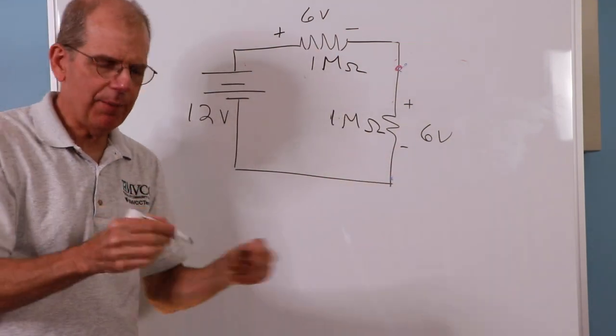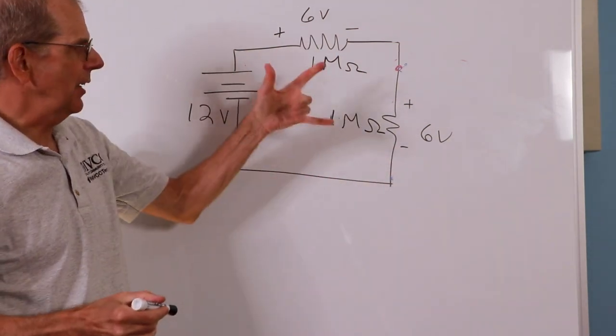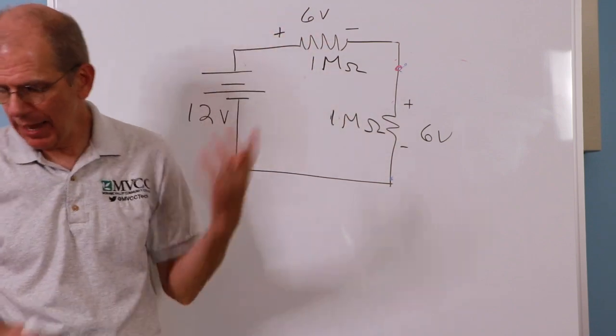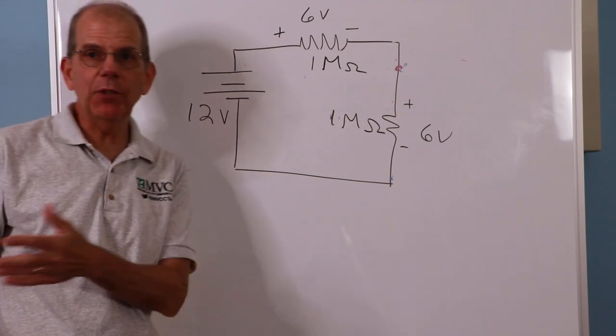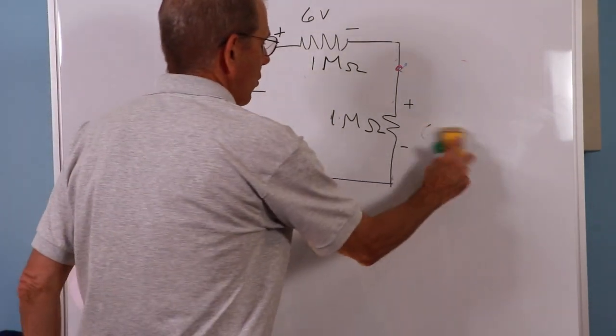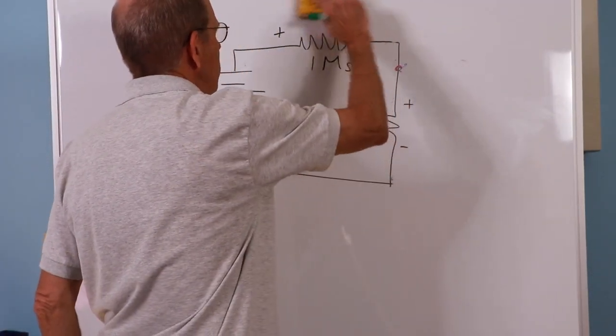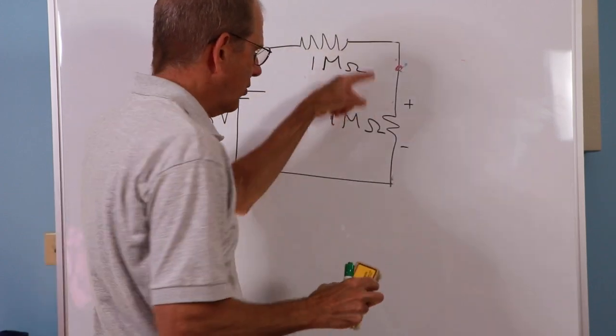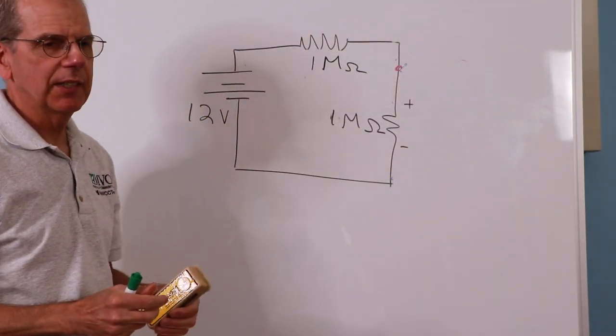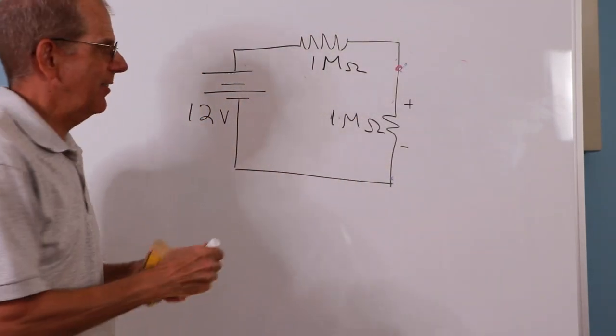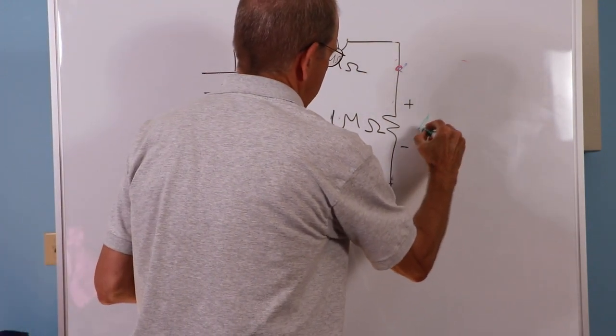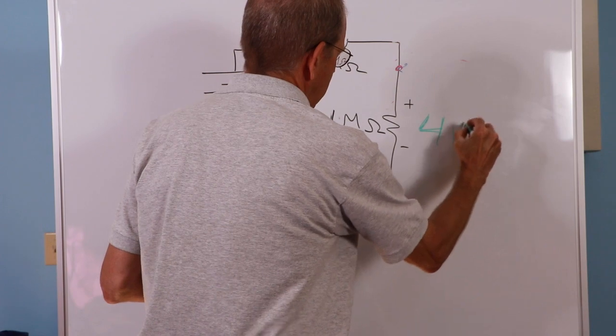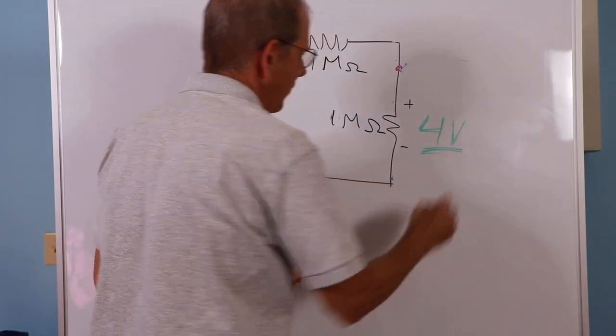But when I go into the lab and I take my meter and I stick the meter across here, I might not get anything like that. As a matter of fact, if I'm using this meter that has a 1 megohm internal resistance, when I go and measure the voltage across this lower resistor, we're not going to read 6. We're going to read, like, 4 volts instead of 6 volts.